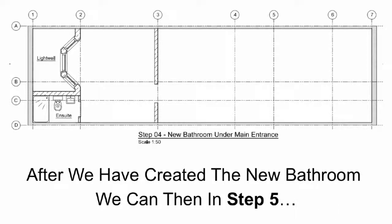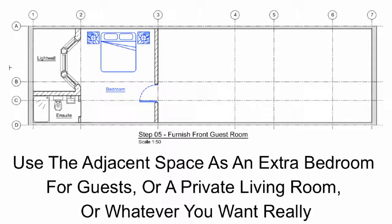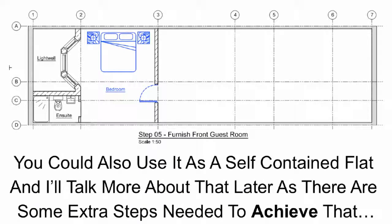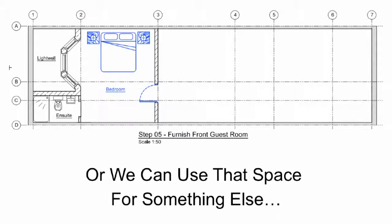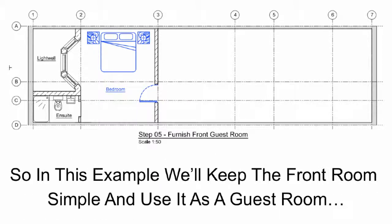After we have created the new bathroom, in step 5 we can use the adjacent space as an extra bedroom for guests, a private living room, or whatever you want. You could also use it as a self-contained flat — I'll talk more about that later as there are some extra steps needed to achieve that. In this example we keep the front room simple and use it as a guest room.